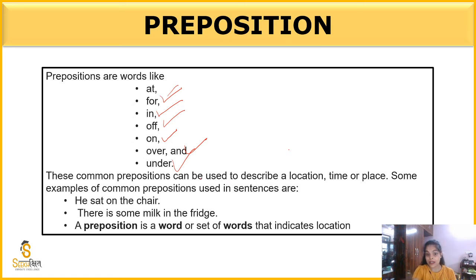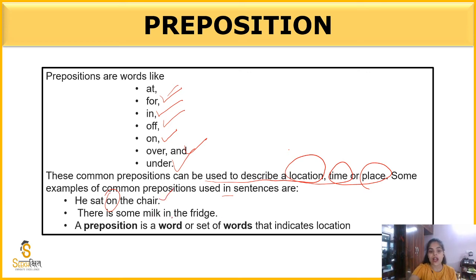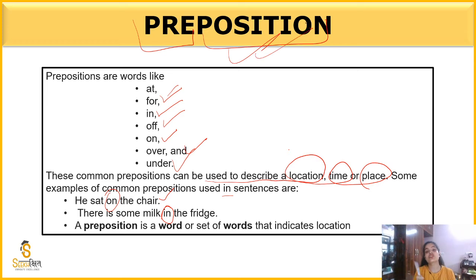So these prepositions can be used to describe location, time, place. Some examples of common preposition used in a sentence are: he sat on the chair, there is some milk in the fridge. Inside of fridge. So these are the power of preposition, that they tell us something, they tell the story, they tell the linkage between the two words which we are talking. They tell us the position of the article, of the thing which we are talking about. The preposition is a word, or set of words, that indicates location.